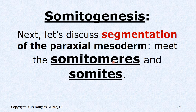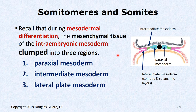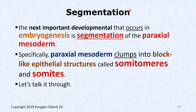We'll first talk about somatomeres and somites. Somatomeres are a relatively new discovery — only two of the major authors, Carlson and Langman, mention them. Langman is a board book for chiropractors so it could be on the boards. Somites have been around a long time and are easily seen with a microscope. Recall that during mesodermal differentiation, mesenchymal tissue of the mesoderm clumped into three regions: paraxial, intermediate, and lateral plate mesoderm.